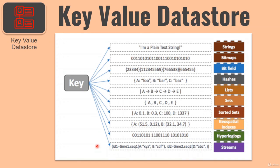Redis is a key-value data store. By key-value data store, it typically means it is going to have a dictionary kind of format — it is going to have a key and also store a value which is a description about that key. Typically in a key-value data store, we keep both key and value in string format, but Redis supports other data types as well. As you can see in this pictorial diagram, the key can have a value of strings, bitmaps, bitfields, hashes, lists, sets, sorted sets, and so on. So it provides a very wide range of data types which are available to be stored in Redis — it is not like your typical key-value data store which only works with string data types.